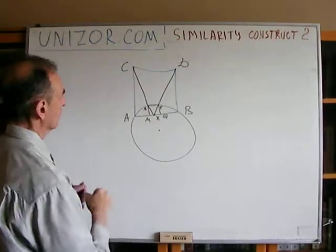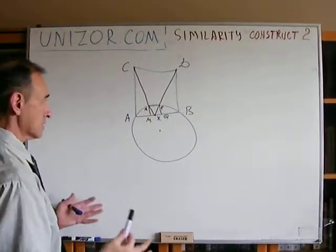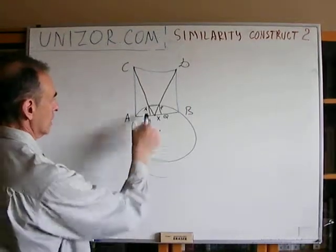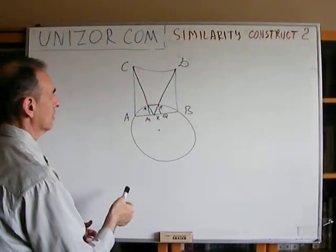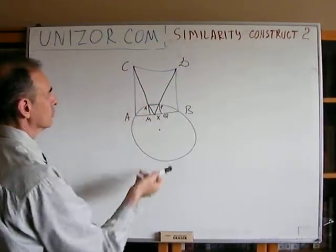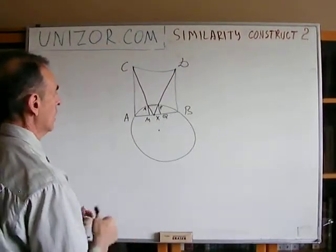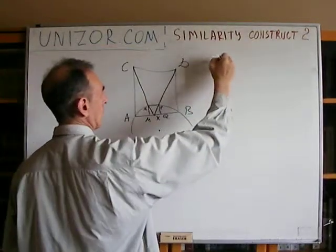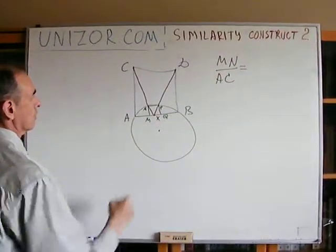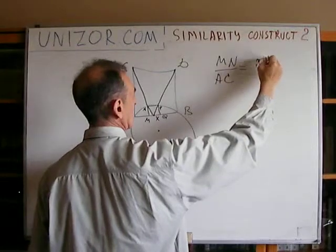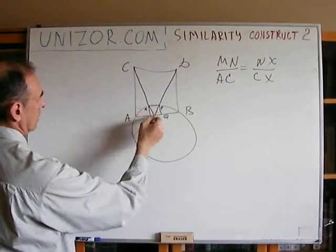The proof uses similar triangles. Consider triangle XCA and triangle XNM: since NM is perpendicular and CA is also perpendicular, and they share a common angle at X, these two right triangles are similar. Therefore MN over AC equals NX over CX.